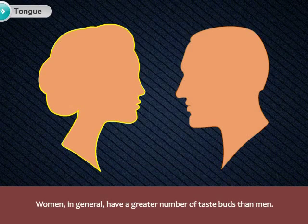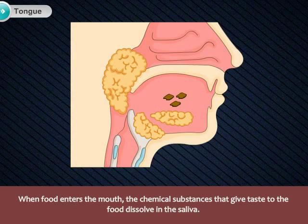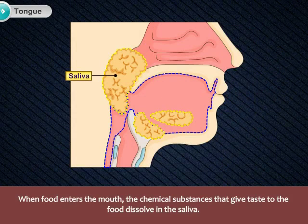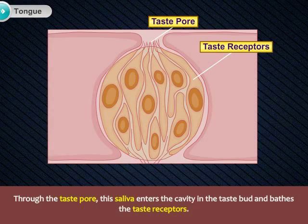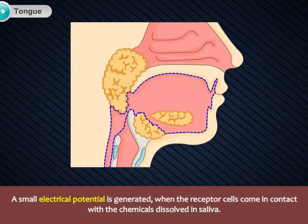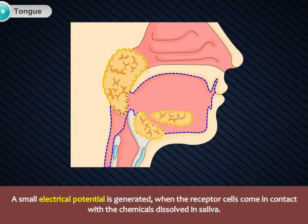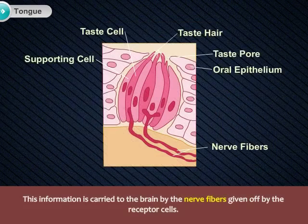Women, in general, have a greater number of taste buds than men. When food enters the mouth, the chemical substances that give taste to the food dissolve in the saliva. Through the taste pore, this saliva enters the cavity in the taste bud and bathes the taste receptors. A small electrical potential is generated when the receptor cells come in contact with the chemicals dissolved in saliva, and this information is carried to the brain by the nerve fibres given off by the receptor cells.